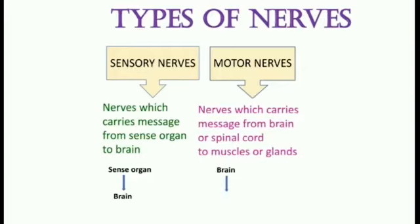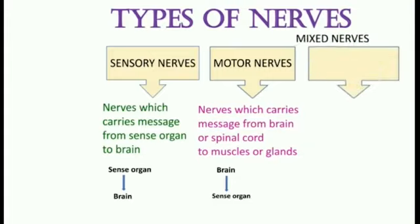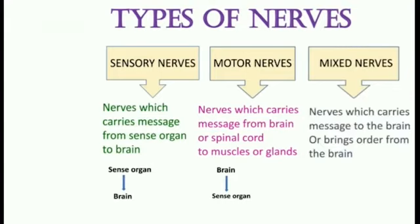Next are motor nerves. Motor nerves are those nerves which carry messages from the brain or spinal cord to the muscles or glands. The third type is mixed nerves — those nerves which carry messages to the brain or bring orders from the brain.